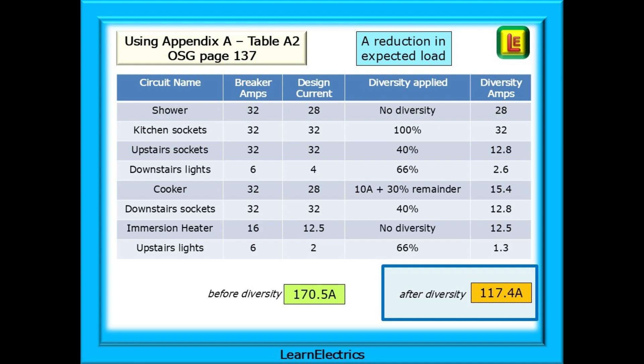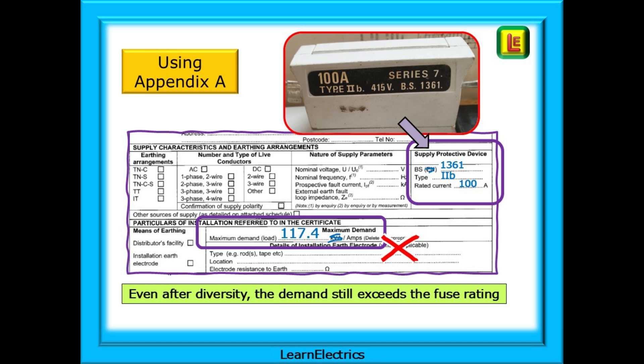The new figure is a little over 117 amps. With 117.4 amps as our maximum demand after diversity, we can clearly see that this still exceeds the rating of the cutout fuse by nearly 20%. Not by as much as before, but still enough to just not look right. We all know that a 100-amp cutout fuse is the standard size as installed by all network operators, and the circuit breakers in this house are very typical of hundreds of thousands of other houses. So what's going on? How do we arrive at a figure that looks like it makes sense?